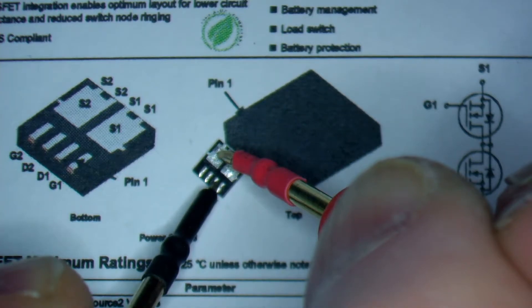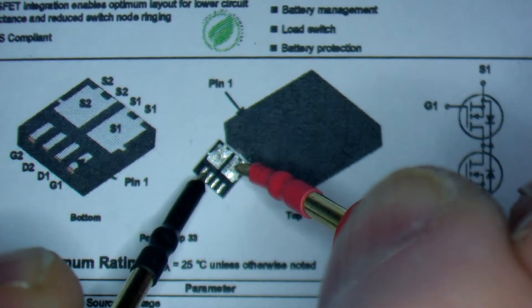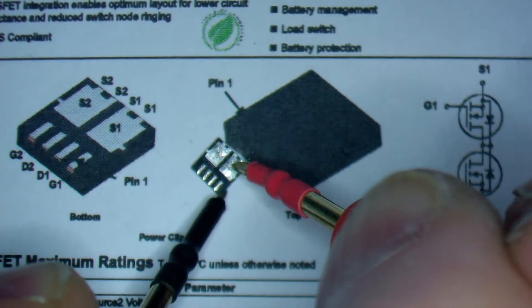So discharge the next gate. And now, as you may see, the MOSFET is perfectly fine.